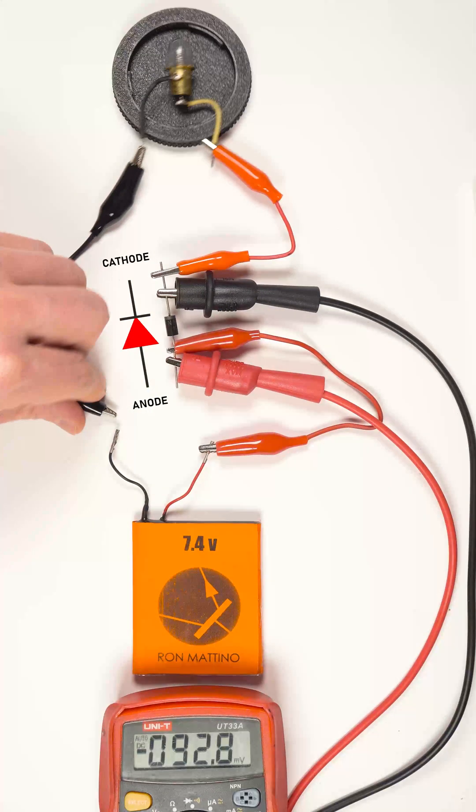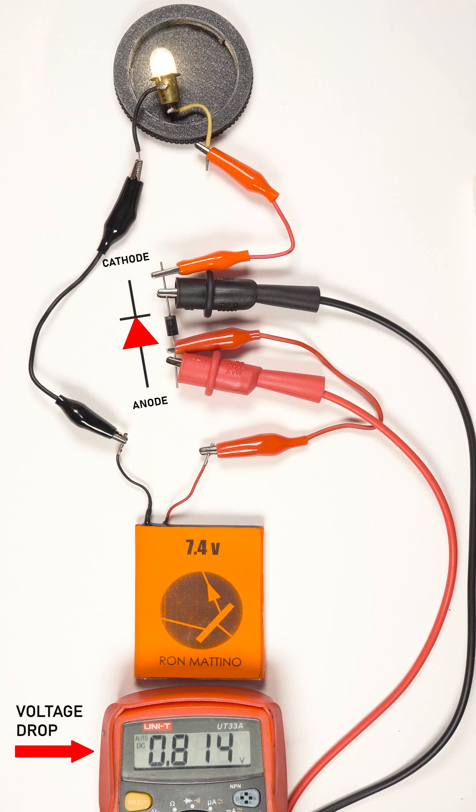If wired in series with a load, the diode exhibits voltage drop. This feature can be used to build a simplistic step-down regulator.